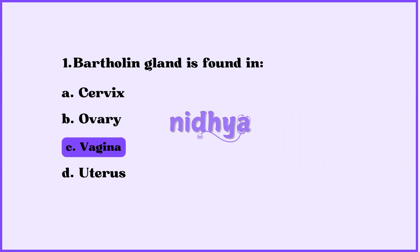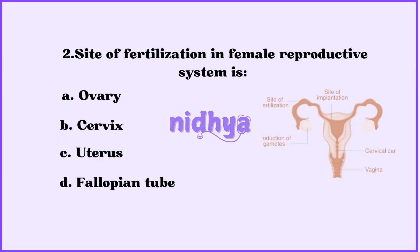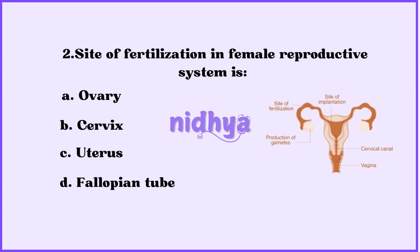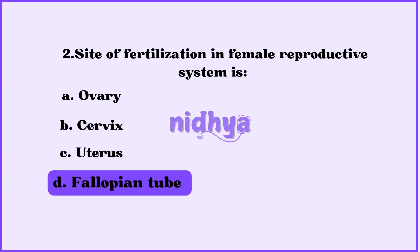Second question: The site of fertilization in the female reproductive system is — ovary, cervix, uterus, or fallopian tube? The answer is fallopian tube.